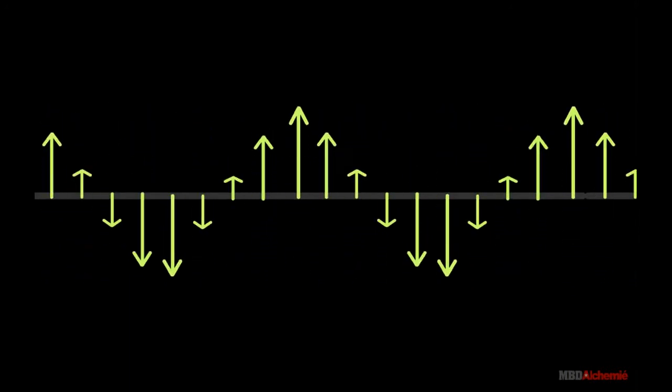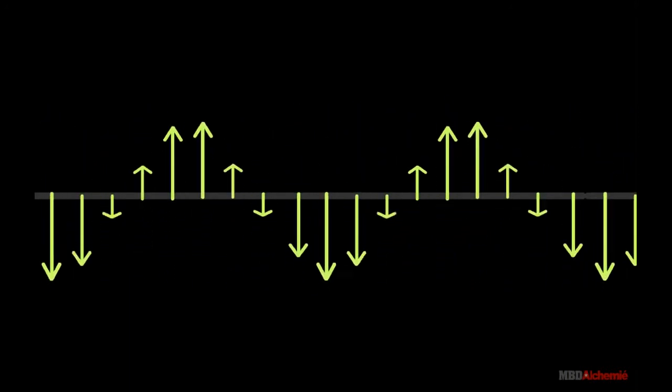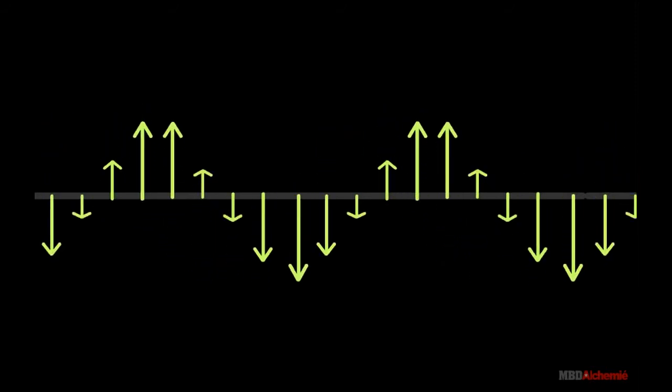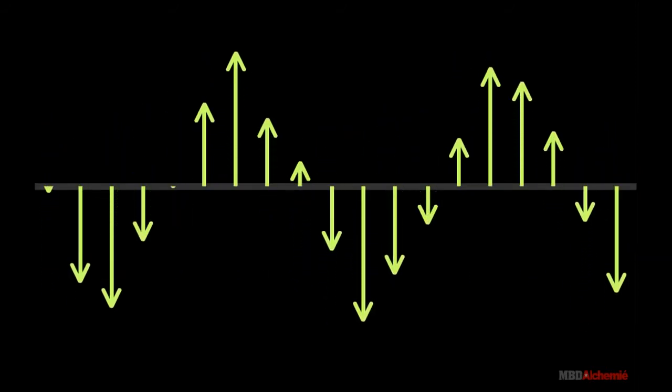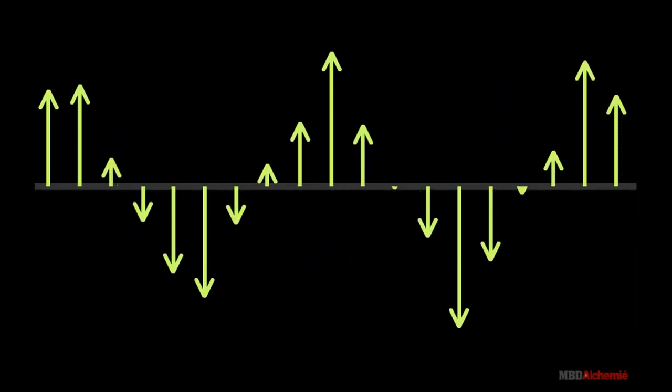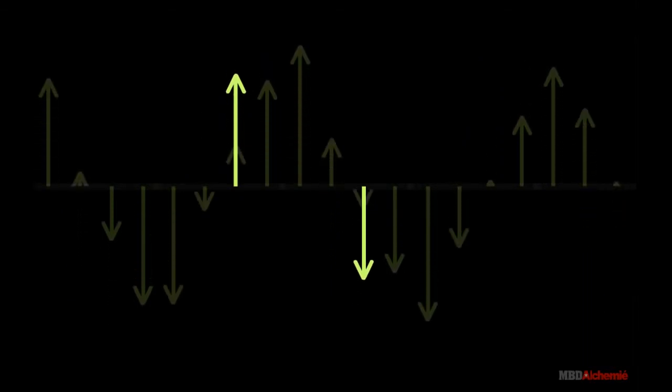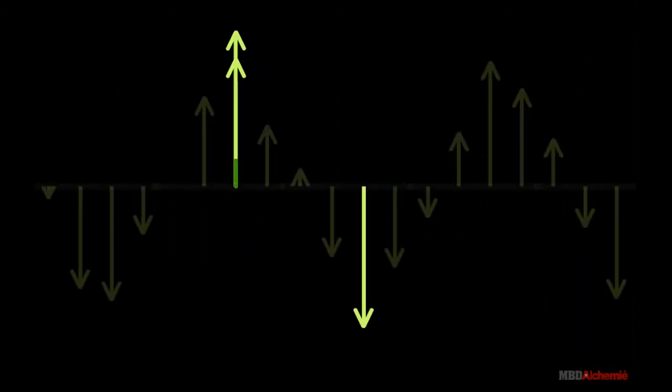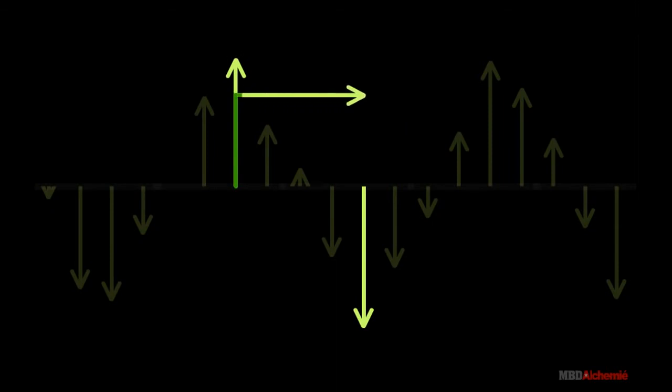The oscillating charge gives rise to an oscillating or time-varying electric field in space. The oscillating electric field gives rise to an oscillating magnetic field, which, in turn, becomes a source of oscillating or time-varying electric field, and so on.